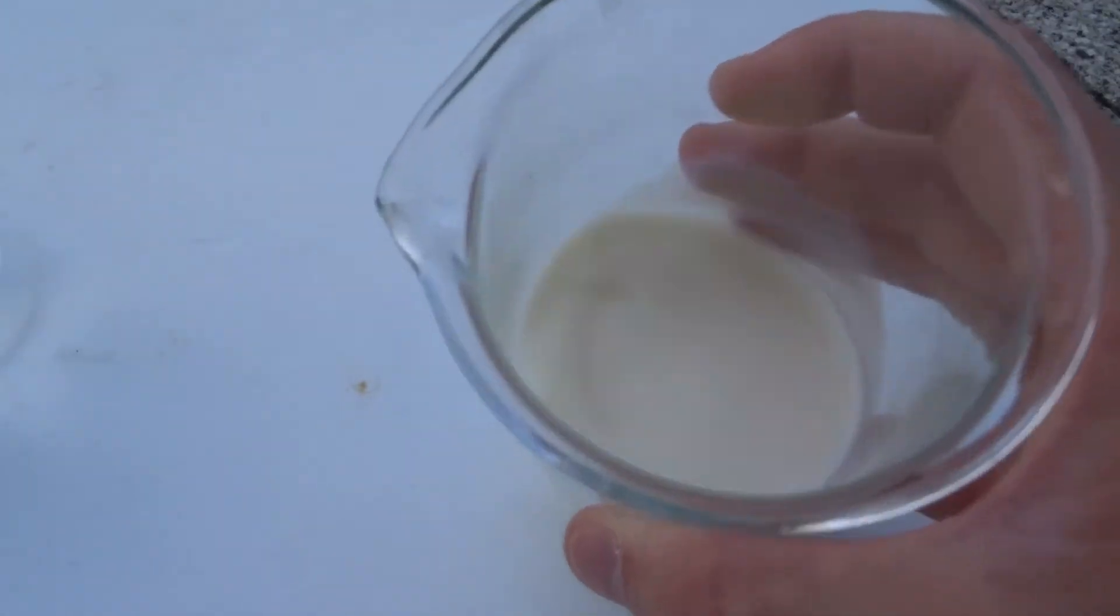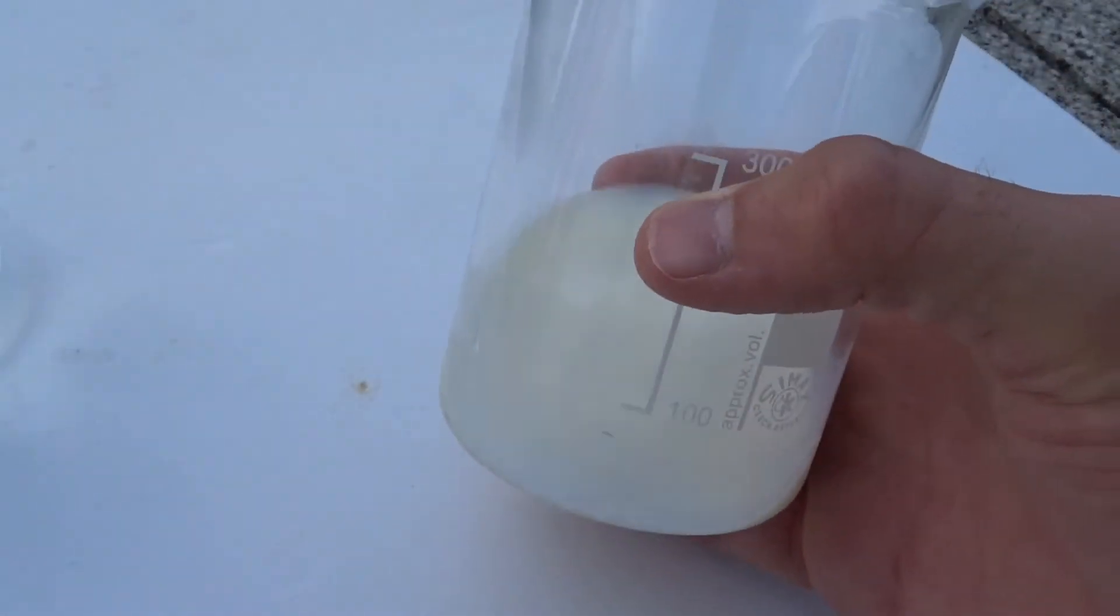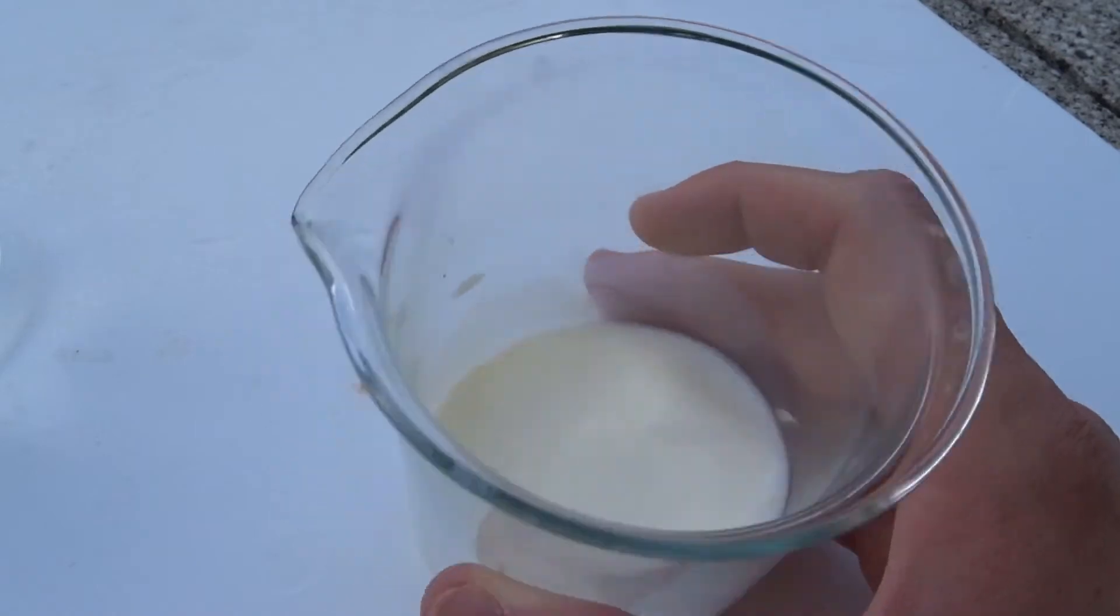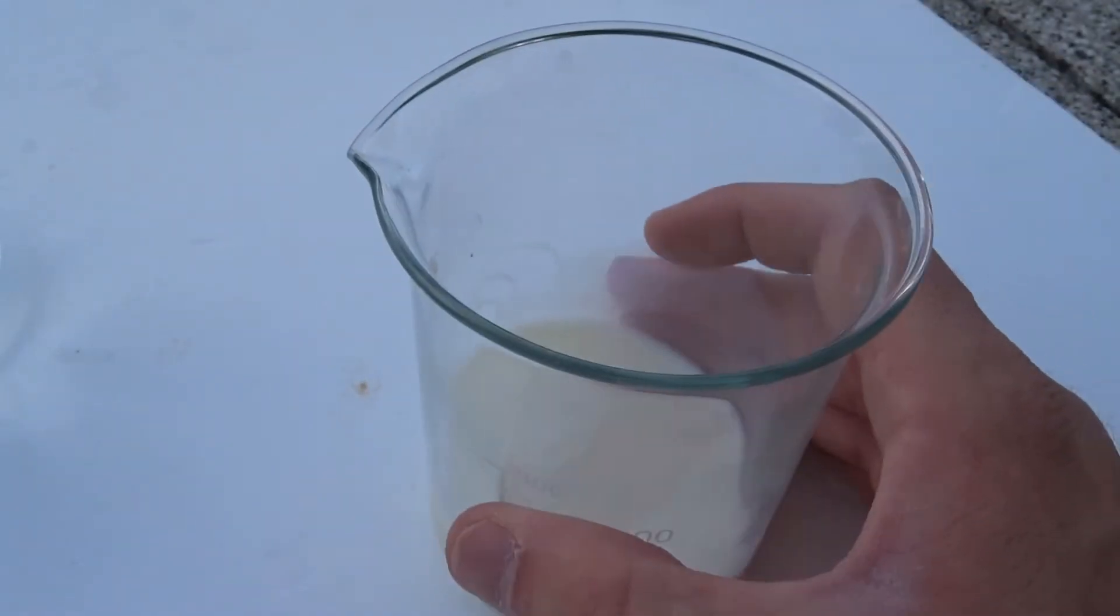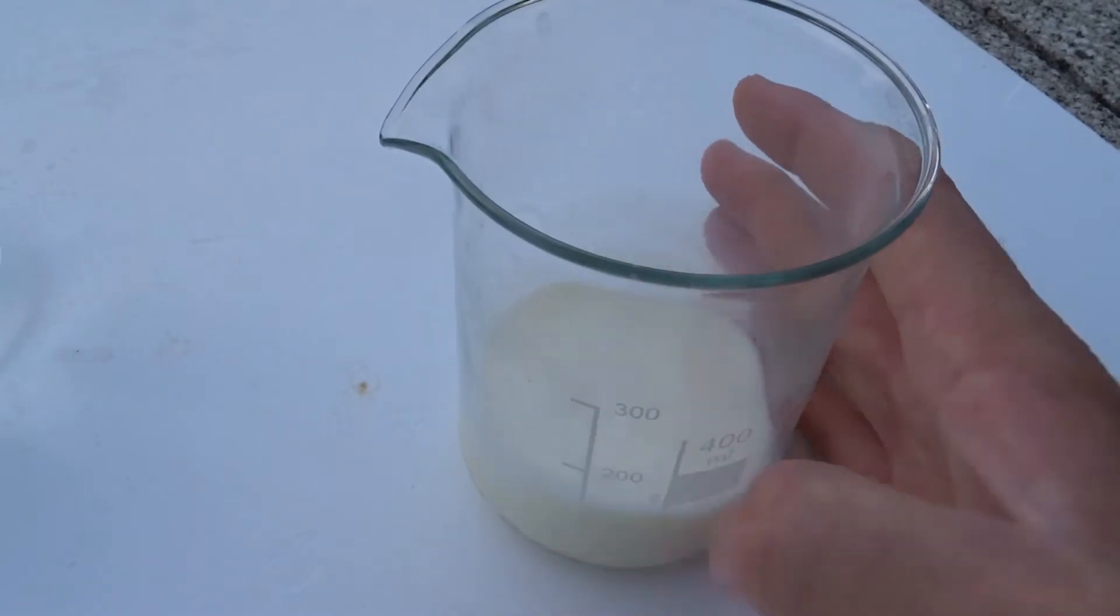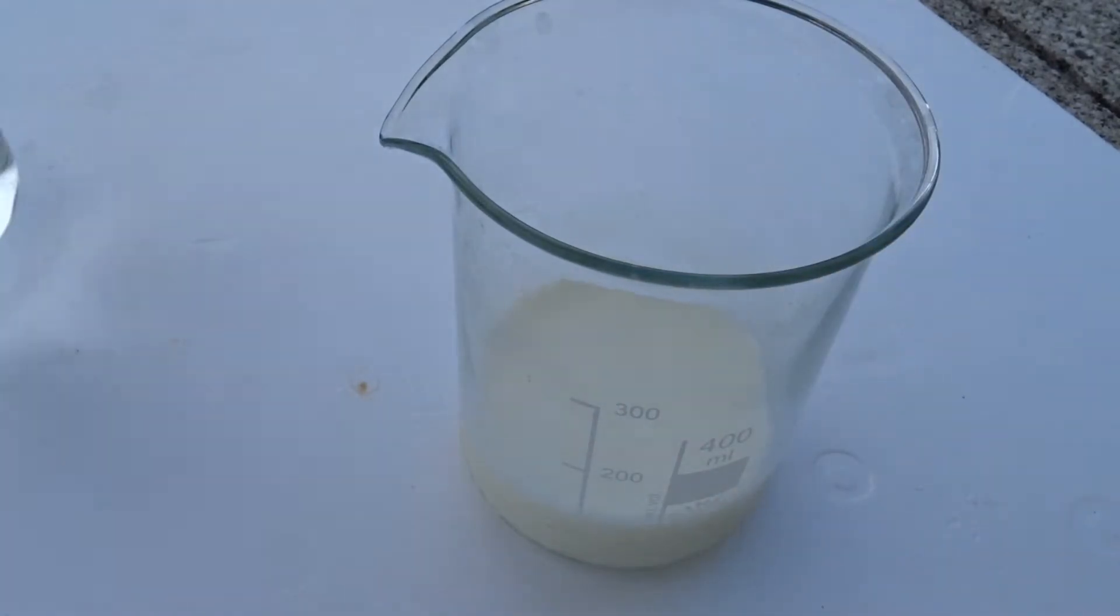So here I have 100 ml of fresh cold milk right from the fridge. It's the 1.5% fat if you're interested. First thing I'm going to do is top this off to around 300 ml. 400 is probably better.